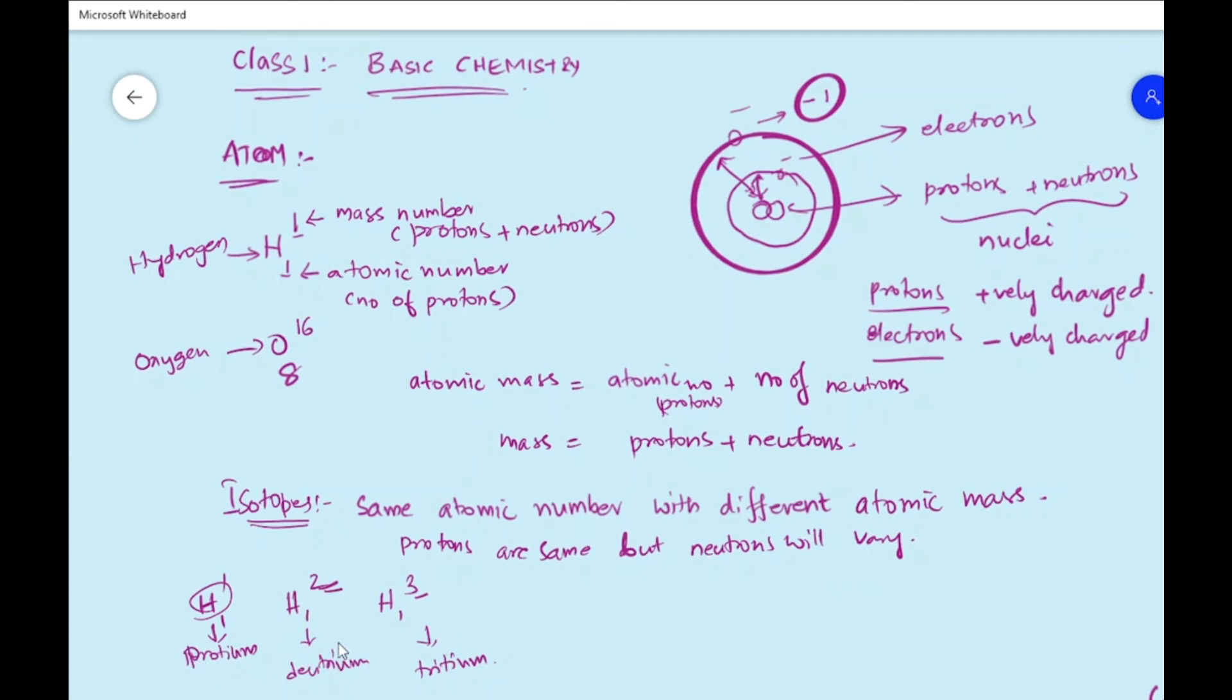Similarly, you can take thorium, cobalt, uranium - everything has their own isotopes because of these neutrons. They have their own radiation capabilities because these are being used for fission and fusion reactions. We need high numbers of neutrons.